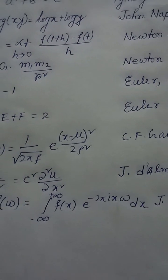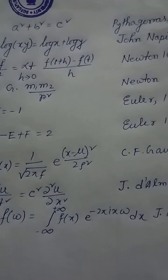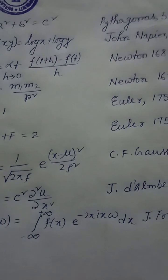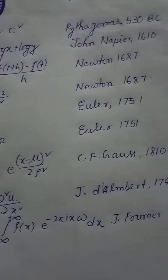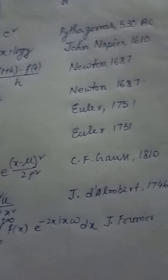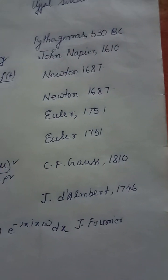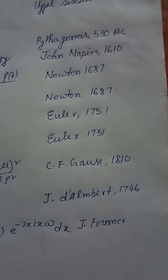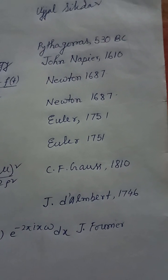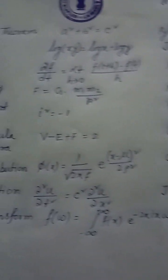Wave equation continued: the second derivative of U divided by delta t squared equals C squared times the second derivative of U divided by delta x squared. John Baptiste le Rond D'Alembert, 1746.